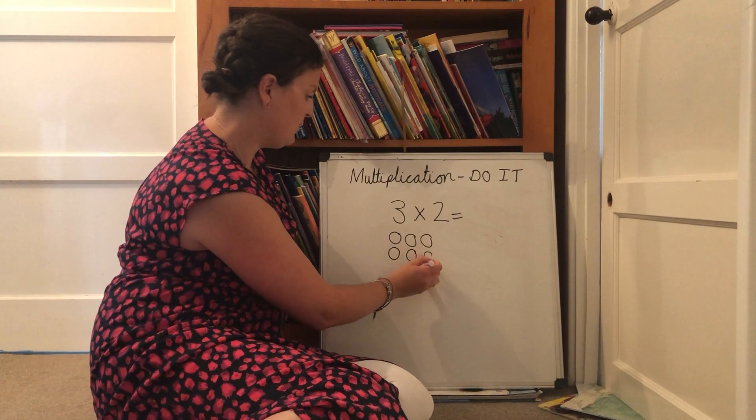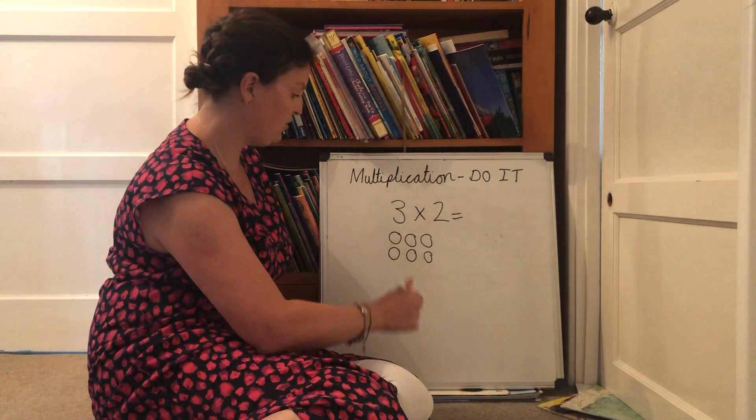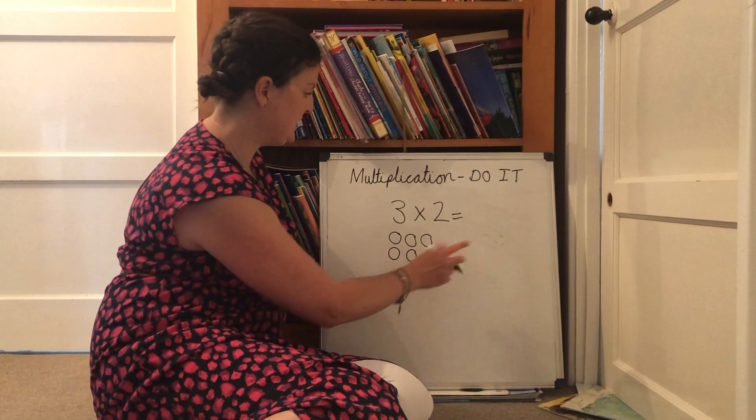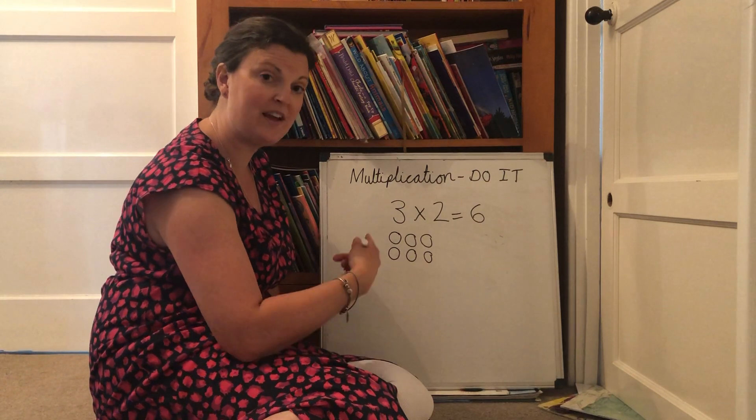So there's another one. And because I can see that they're organized in rows of two, I can count them like that. Two, four, six. And the answer is six. Did you get the same answer?